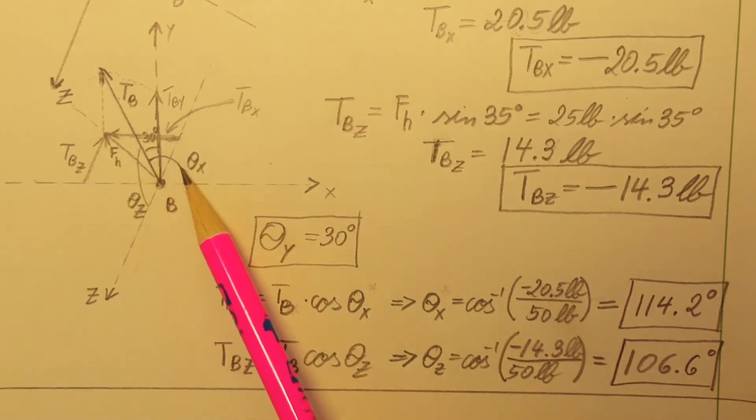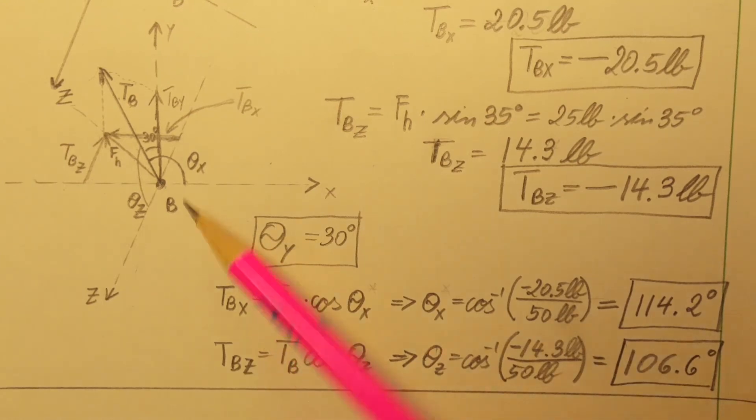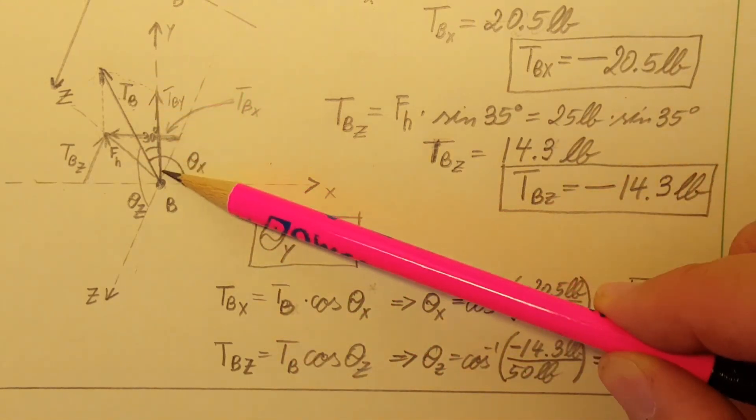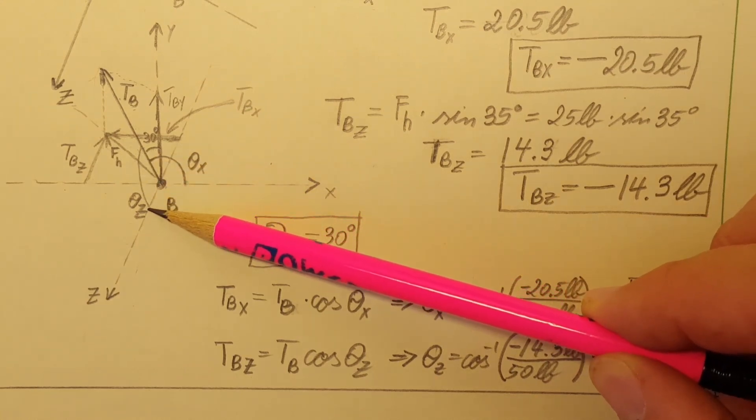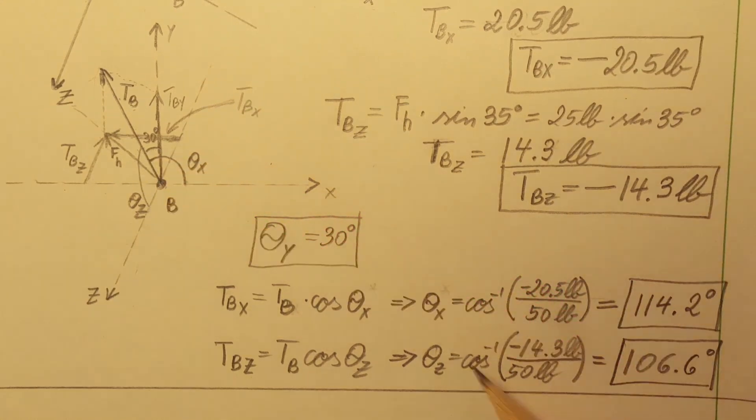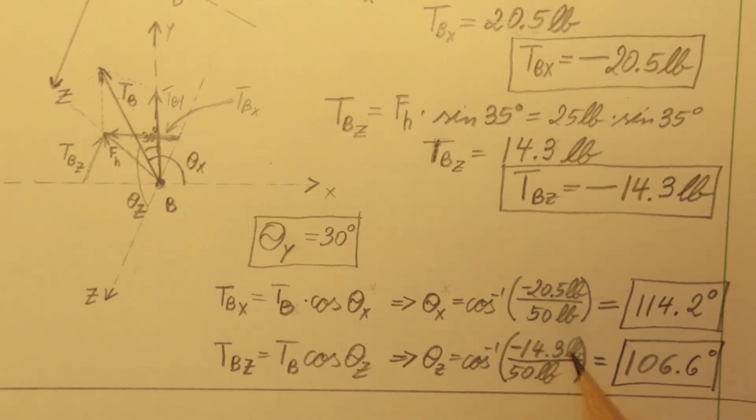For the angle that goes to the z-axis from our TB coming down to the positive side of z-axis, plug in our values, don't forget the negative, and we're going to get 106.6 degrees as our result.